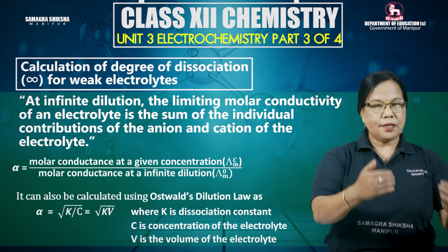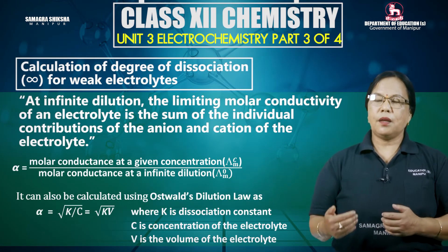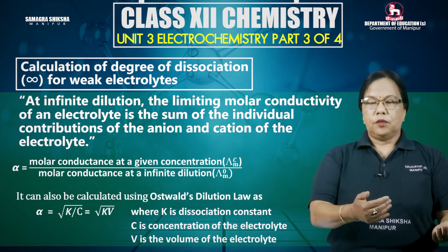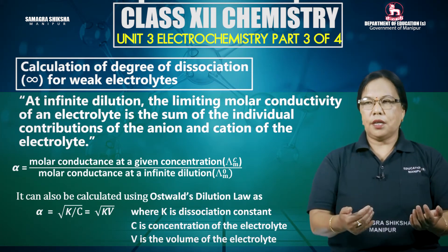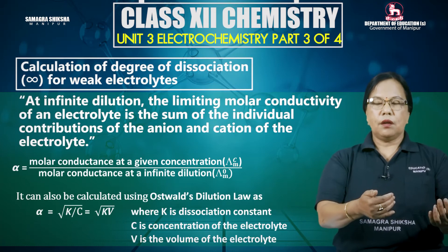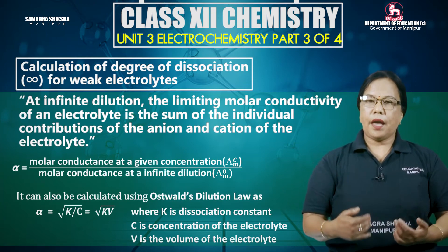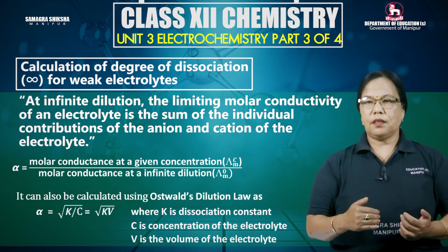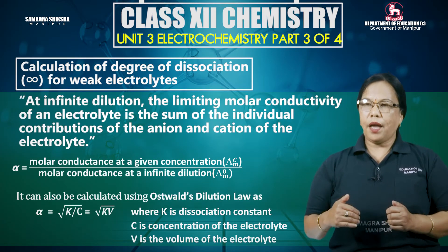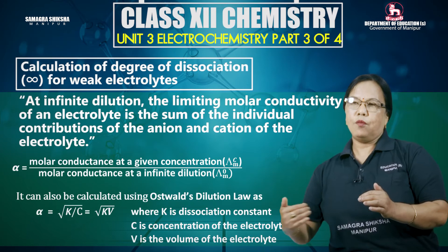The limiting molar conductivity of acetic acid is obtained using the individual contributions of the acetate ion and hydrogen ion. Using limiting molar conductivity values of sodium acetate, hydrochloric acid, and sodium chloride, we can calculate the limiting molar conductivity of acetic acid.